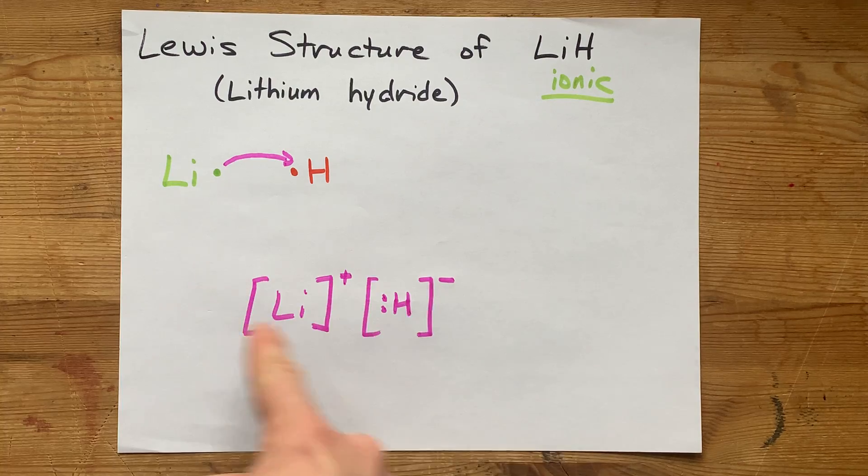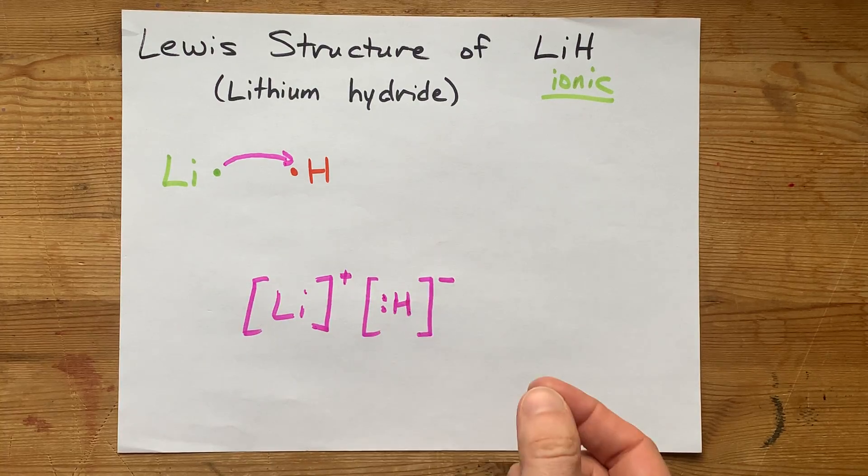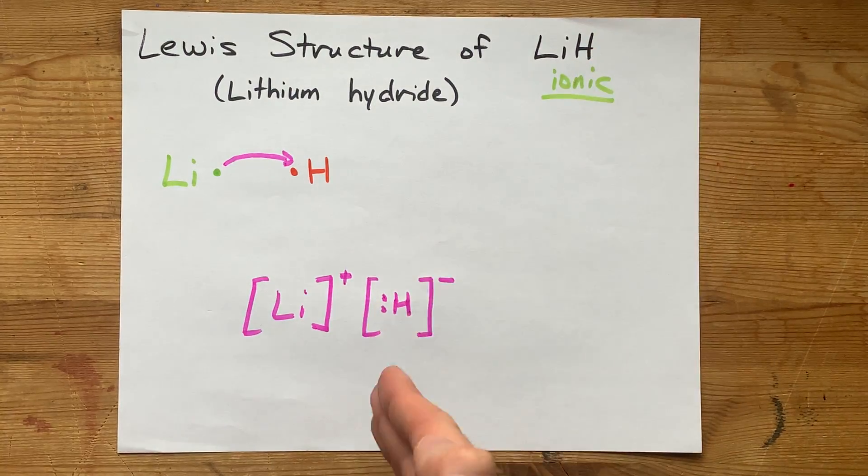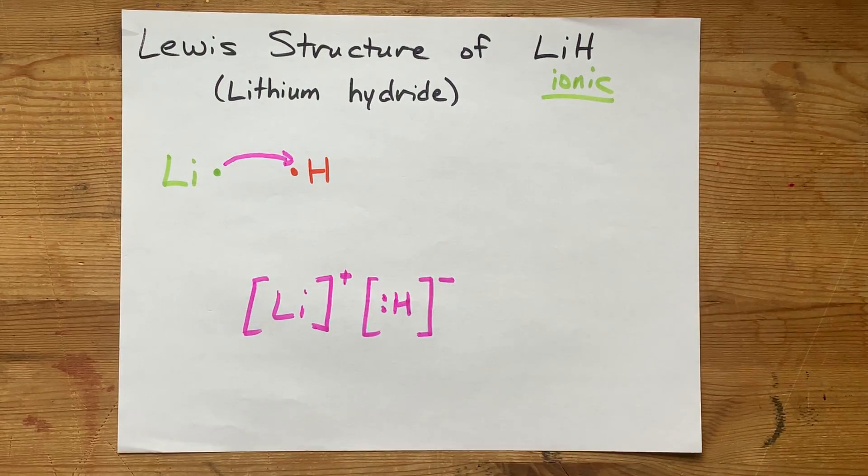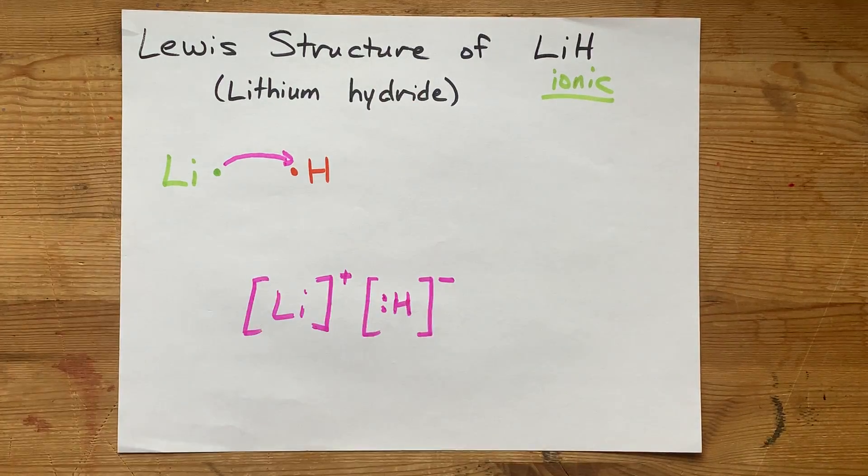This is the complete Lewis structure for lithium hydride. What makes this a hydride is the fact that you have this H minus ion in the structure. Thanks for being with me, and best of luck.